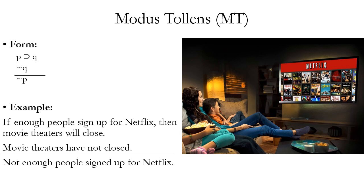A second rule of inference is modus tollens, abbreviated MT. Modus tollens has one premise that's a conditional and another premise that's the negation of the consequent of that conditional. If two premises fit that general form, you can validly conclude the negation of the antecedent. For example: 'If enough people sign up for Netflix, then movie theaters will close. Movie theaters have not closed. Therefore, not enough people signed up for Netflix.'